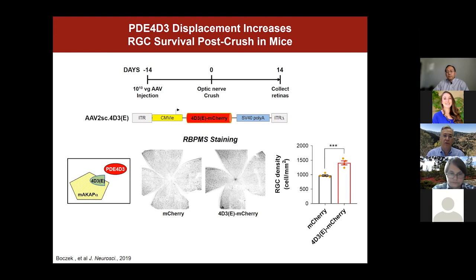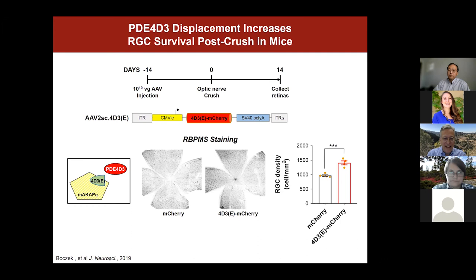What we found was that retinas where we overexpressed this competing peptide had increased RGC survival two weeks post-crush. The increase in survival, which was quite reproducible across different postdocs in the lab, was equivalent to the level of neuroprotection conferred by intravitreal cyclic AMP injection. Taken together with the scaffold knockout data, this suggests that the MAKA-cap signalsome is a pivotal node in the network for cyclic AMP neuroprotection.